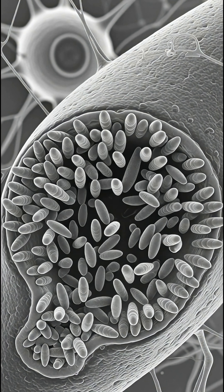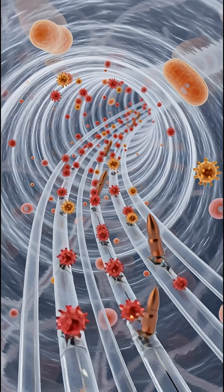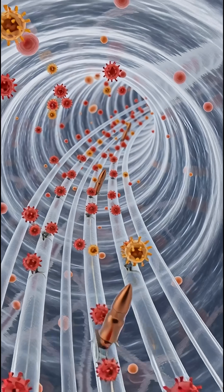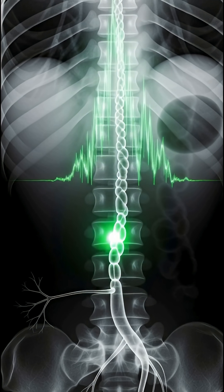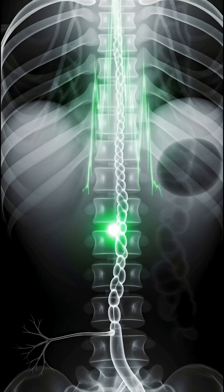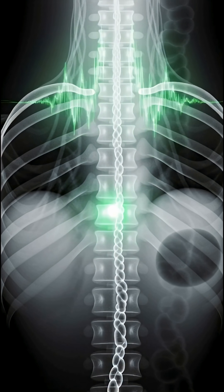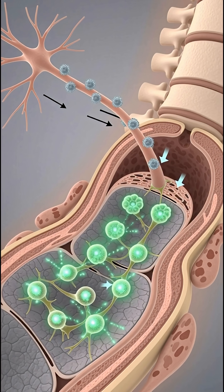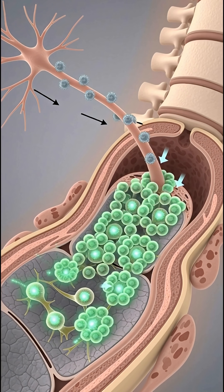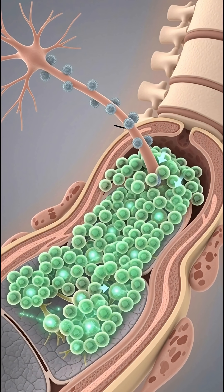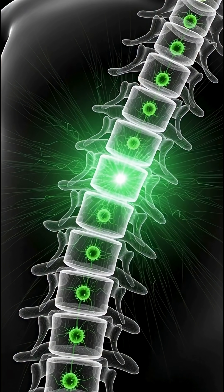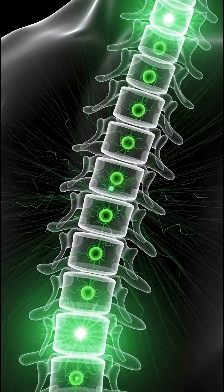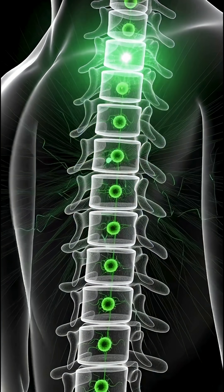Now inside the nervous system, it begins a relentless one-way journey, moving upward from the initial nerve into larger nerve bundles. This ascent is slow but constant, as the virus is transported along the neural pathways, next reaching the dorsal root ganglia and entering the spinal cord. Inside the spinal cord, the infection amplifies, with the virus replicating and spreading to connected neurons, creating a bridgehead for the final assault.